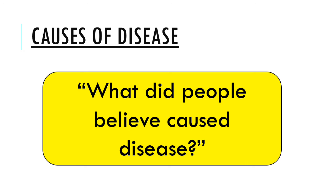In terms of content, we are going to break each section down and study the same sort of themes as we go through. Probably the most important of these is the causes of disease — in each of the time periods from 1250 through to the present day, what did people believe caused them to be ill? It's really important that we understand we are looking at what those people thought was making them ill, not what we know it would have been. This idea of causes of disease is our start point for understanding everything else, because your understanding of what you think is making you ill determines how you go about trying to treat that illness.